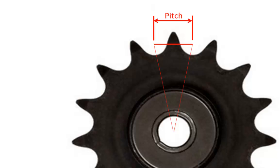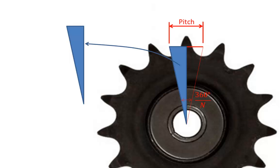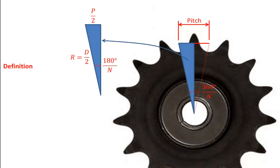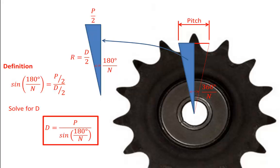Let's derive a simple equation for computing the pitch diameter of a sprocket. The pitch is the straight-line distance from tooth to tooth. If we know the number of teeth, we can find the angle by taking 360 degrees divided by the number of teeth. Making a right triangle by using one half of the larger triangle, this distance is half the pitch and this angle is 180 degrees divided by the number of teeth. This distance is the radius of the pitch circle — one half the pitch diameter. Using the definition of sine, we get sin(180/N) = (p/2)/(d/2), which simplifies to the pitch diameter equation: d = p / sin(180/N).